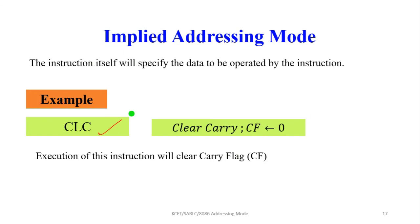Implied addressing mode: the instruction itself implies the data to be operated on. For example, CLC clears the carry flag — the execution of this instruction sets the carry flag value to 0. No operand needs to be specified; the operation is implied by the instruction itself.